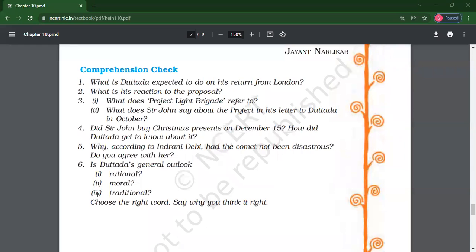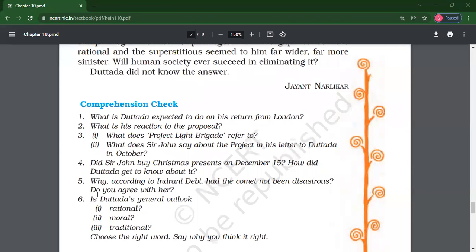Question number four. Did Sir John buy Christmas presents on December 15? How did Dattada get to know about it? Hurry up. Type your answer. I am waiting.